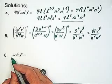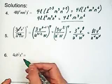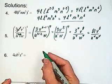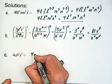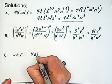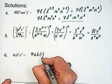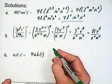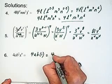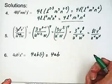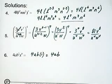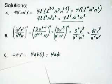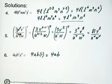Here we have 4ab squared x0. This is 4ab times 1, which equals 4ab. And that's it. That was a pretty easy one for the last one.